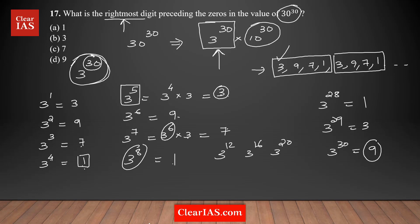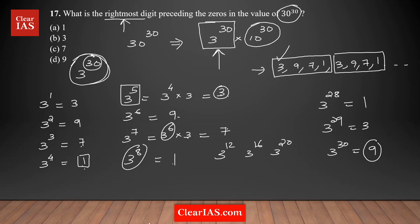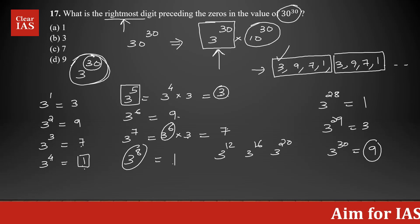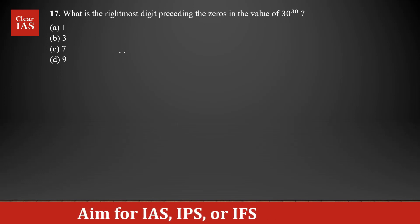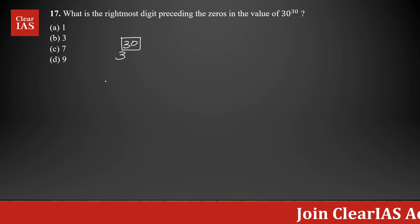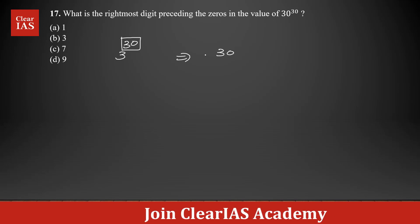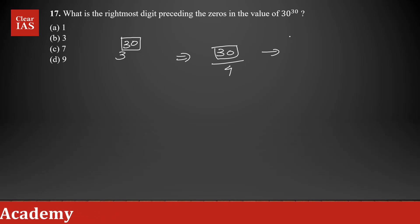In your exam you don't need to work this all out from scratch. Ideally you should remember the cyclicity of digits 2 through 9, so you can figure out the answer within seconds. For 3^30, if you know the cyclicity is 4, you take the power — which is 30 — divide by 4, and find the remainder.